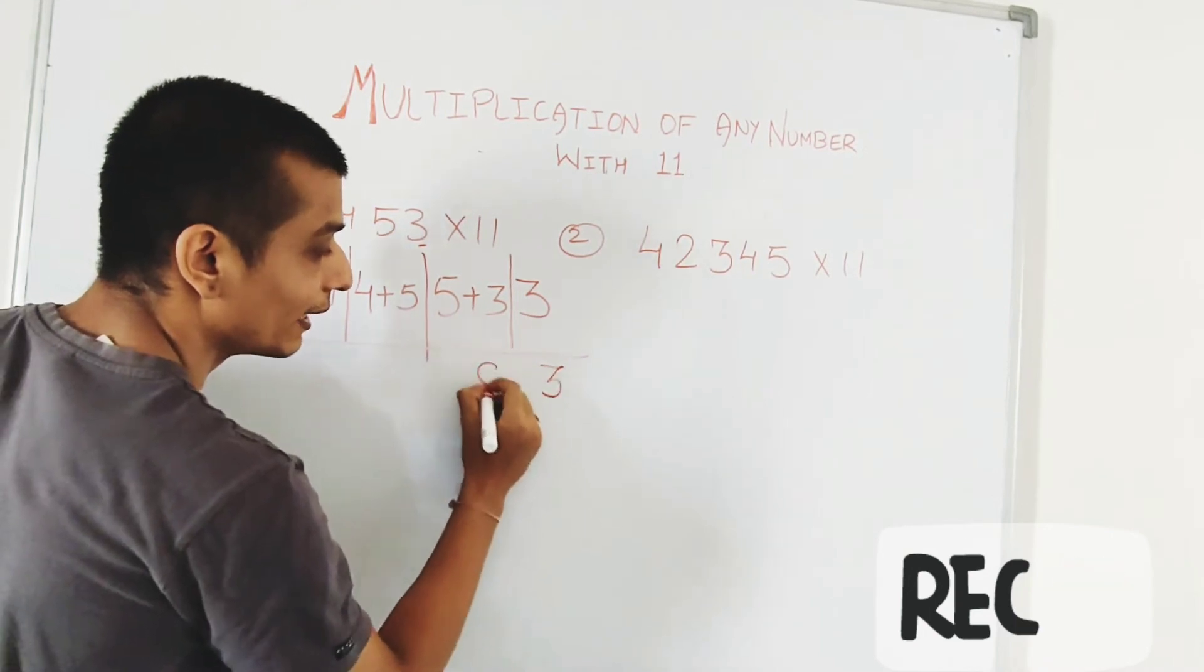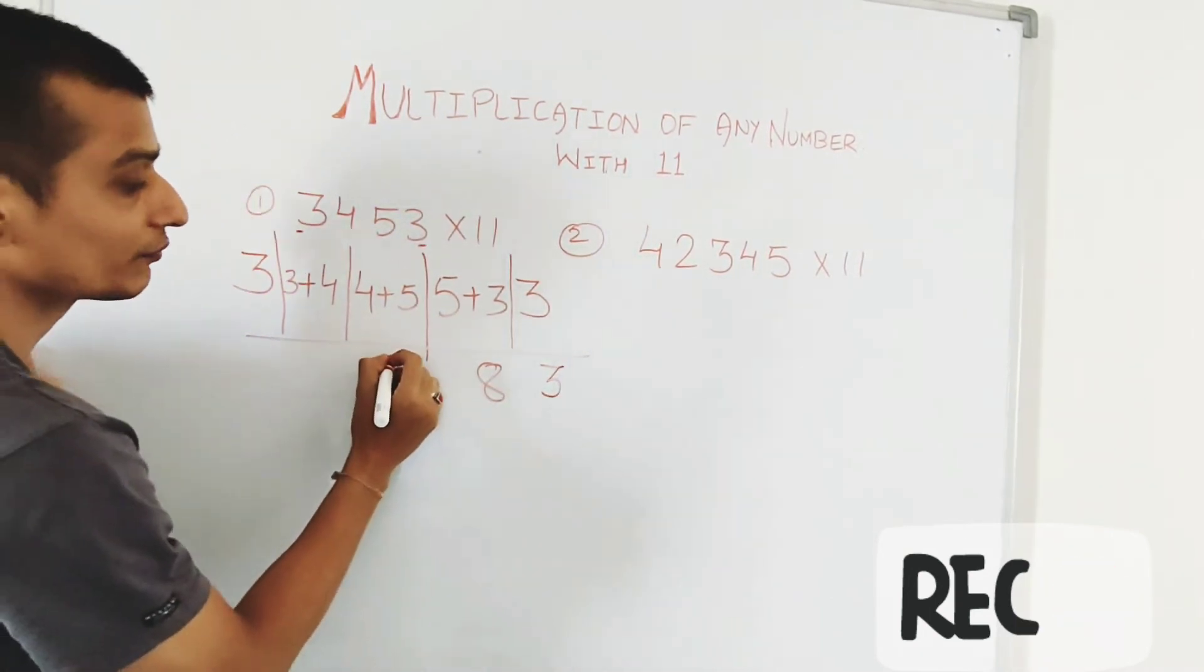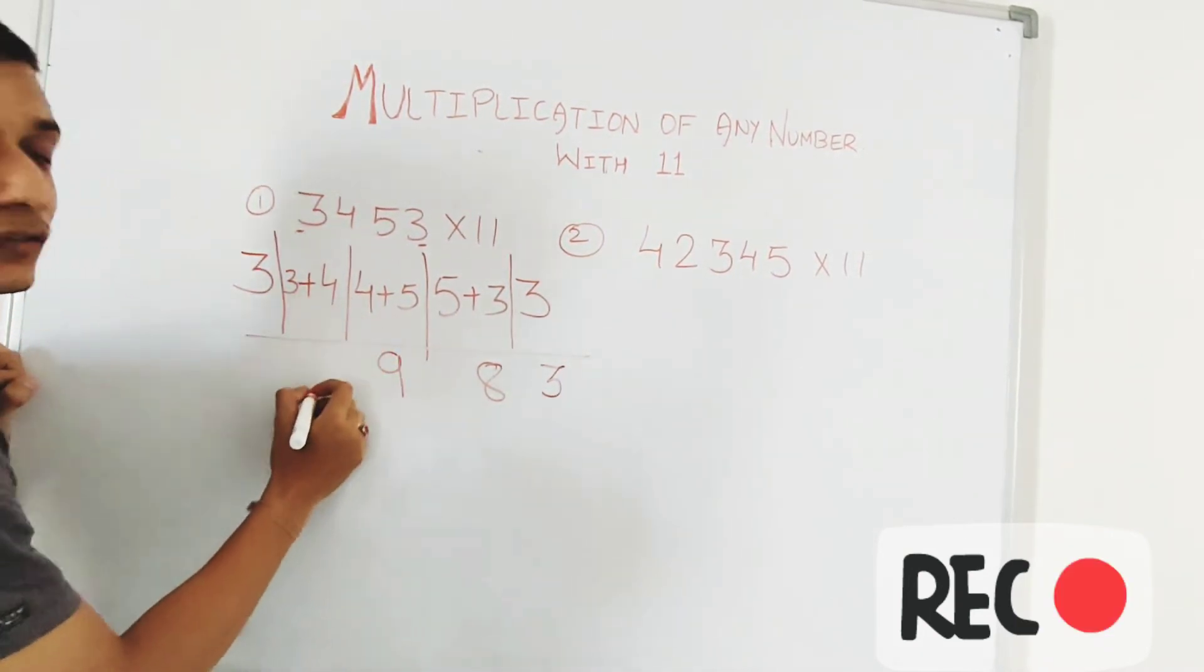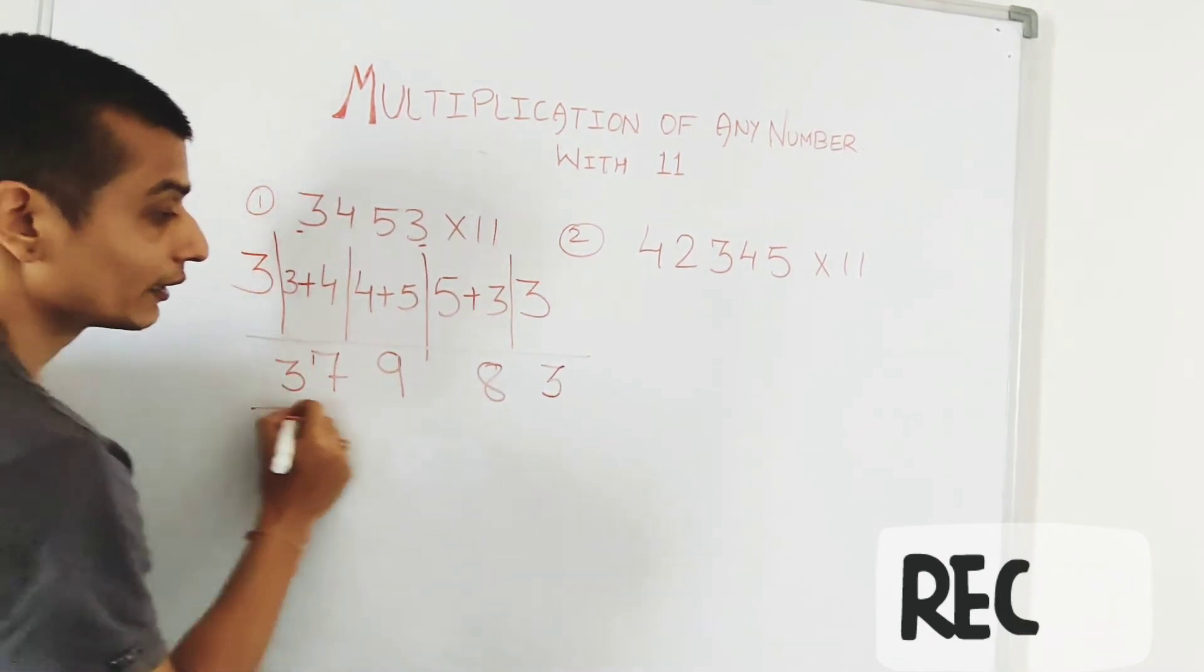Three. Five plus three is eight. Four plus five is nine. Three plus four is seven. And this is three. So it's the answer for three thousand four hundred and fifty three into eleven.